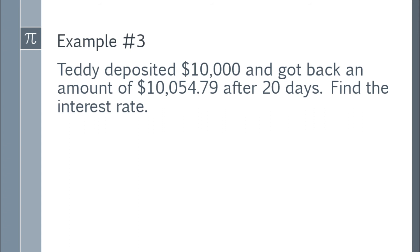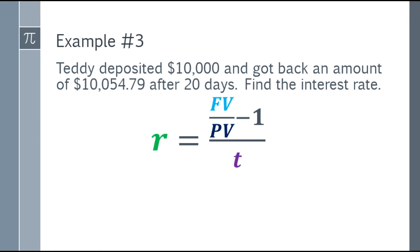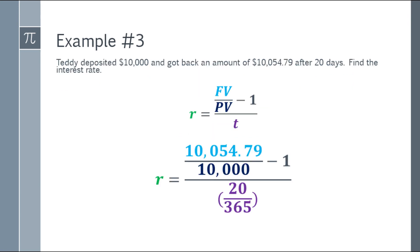Let's place the formula and then we can substitute it. The future value is $10,054.79. Remember, for future value, it's the amount you'll get in the future. Present value or the principal is your initial deposit. So $10,054.79 divided by $10,000, and that answer we minus by 1. For the denominator, that will be 20 over 365. Why? There are 365 days in 1 year and the given is only 20 days, so 20 over 365.